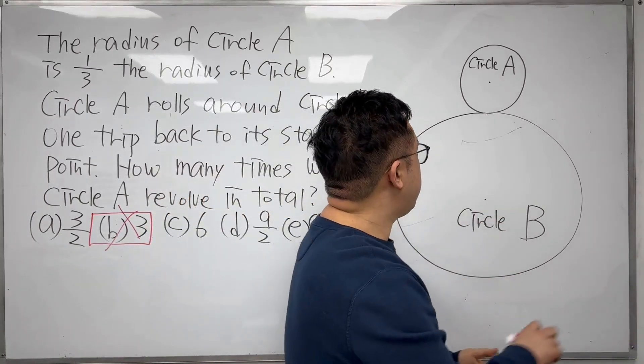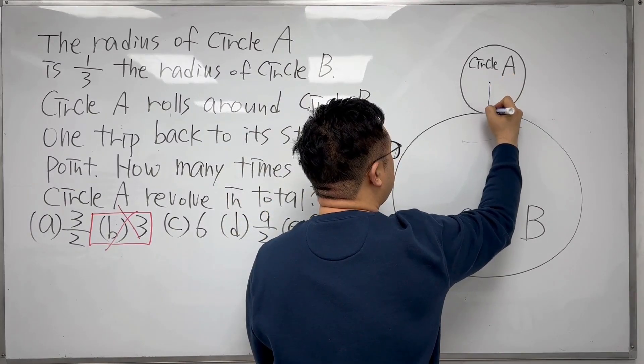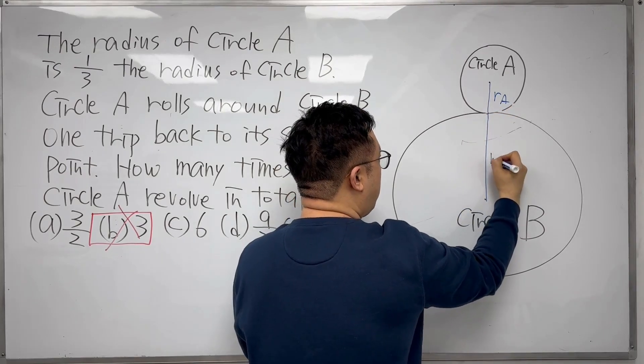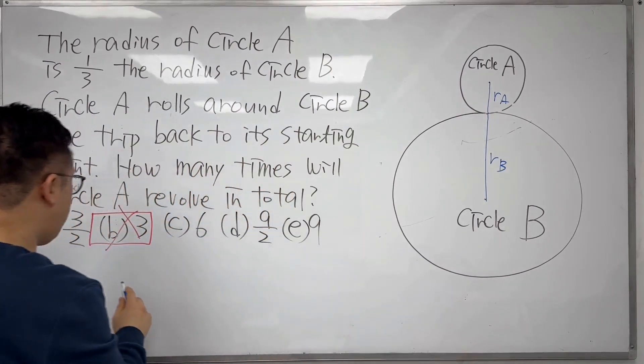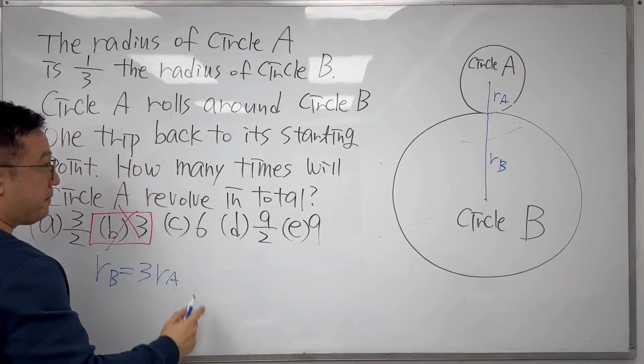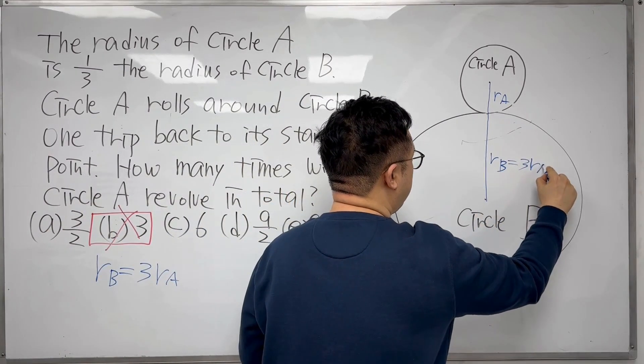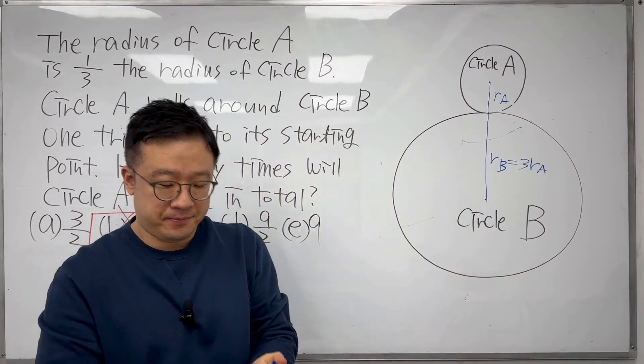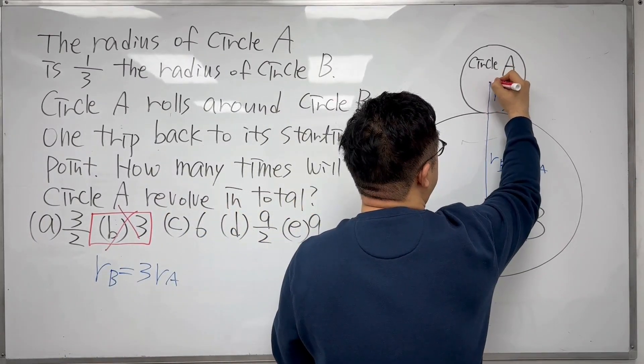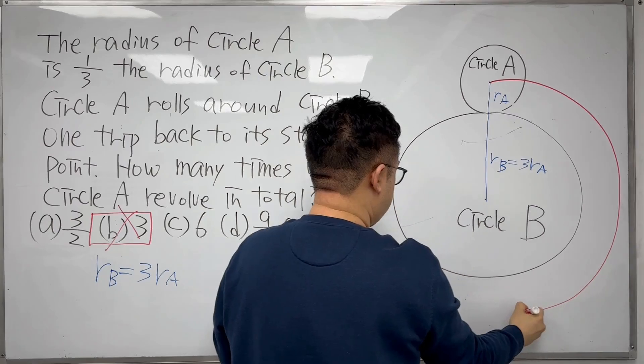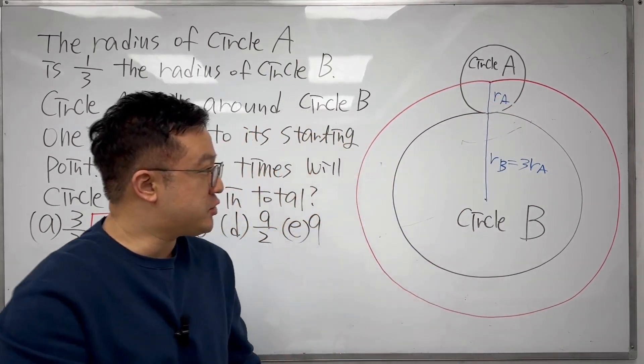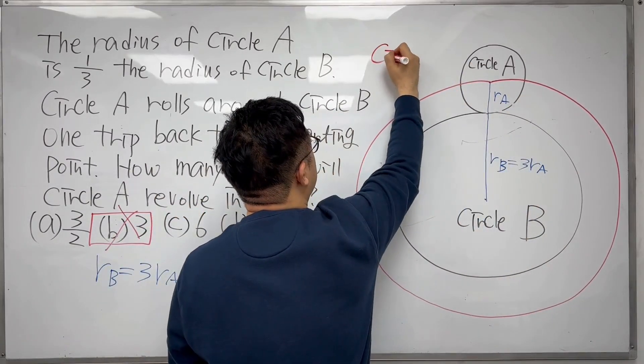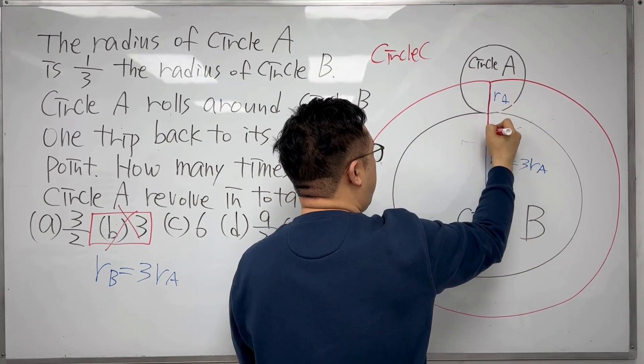So that is why what we need to think is the radius of circle A is RA. And this is the center of circle B. That means this straight line has to be the radius of circle B, which we call RB. We already know RB equals 3 times RA. Since circle A is rolling on the circumference of circle B, we need to make another circle. And we need to get the circumference of this circle in red. This circle in red, I'll call circle C.